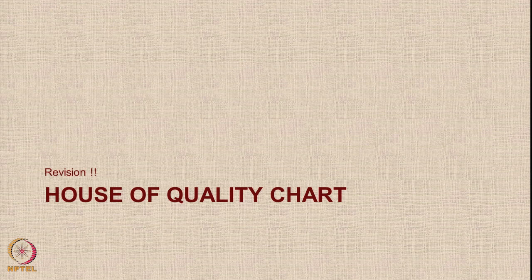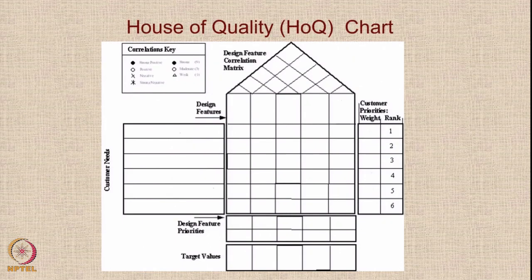A quick revision of the House of Quality chart: on the top roof we have the design feature correlation matrix. In the center, we have the matrix for design feature priority calculation. On the left, we have the input for customer needs. On the right, we have customer priorities with weights and rankings. And on the bottom, we have horizontal rows for design feature priorities and target values based on the study of the competition.